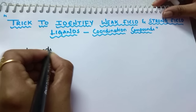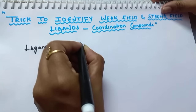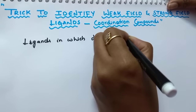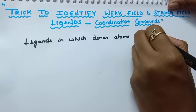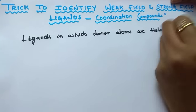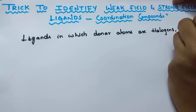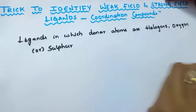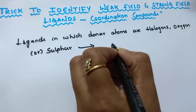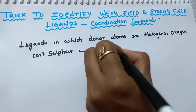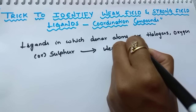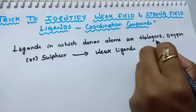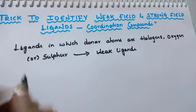Ligands in which donor atoms are halogens, oxygen, or sulfur — generally these are weak ligands. If the donor atom in the ligand is a halogen, oxygen, or sulfur, then it acts as a weak field ligand.